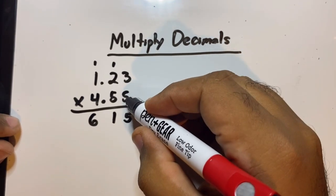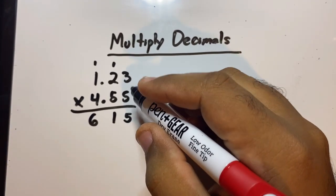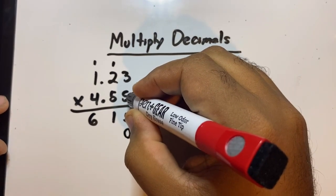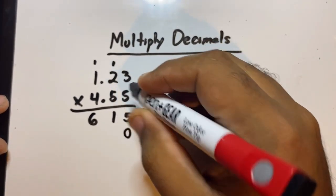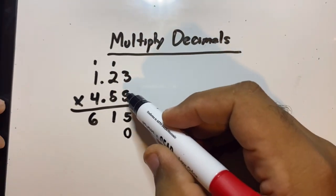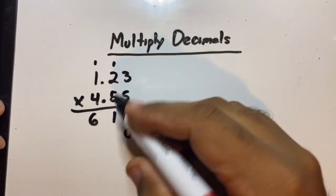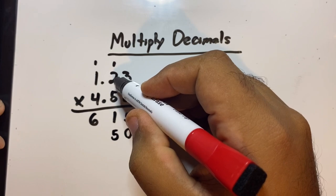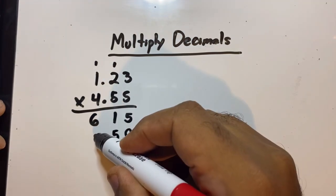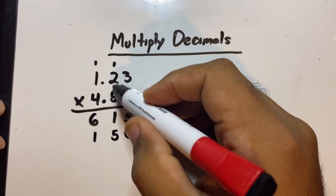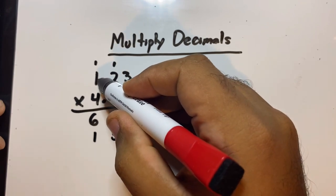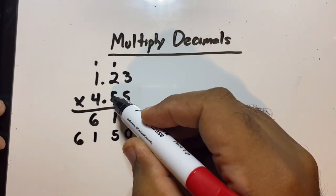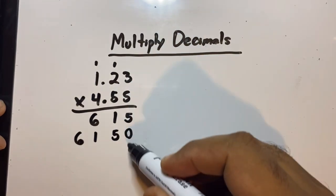We're already done with this five, and if you guys remember my rule, we'll put a zero right over here so we know that this number is done — we don't touch this anymore. Now let's do five times three, which is 15. Carry the one. Five times two is ten, plus the one is eleven. Carry the one again. Five times one is five, plus the one is six.